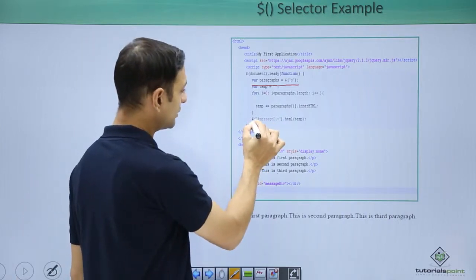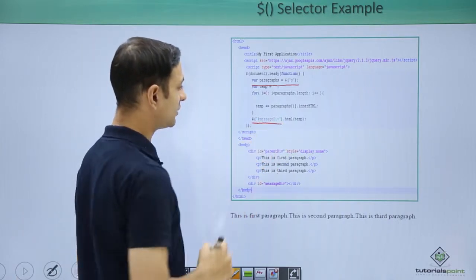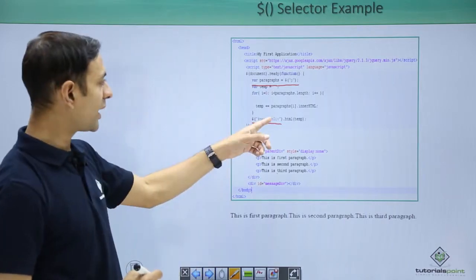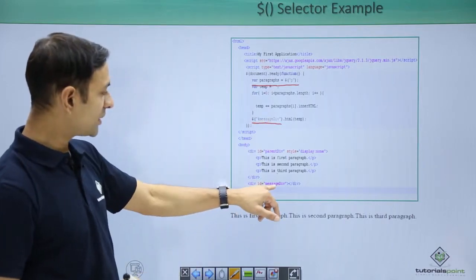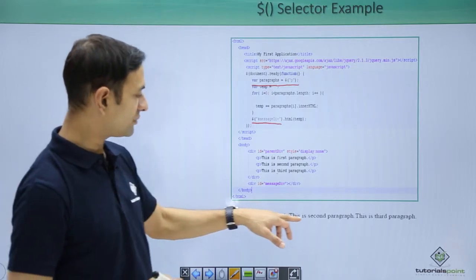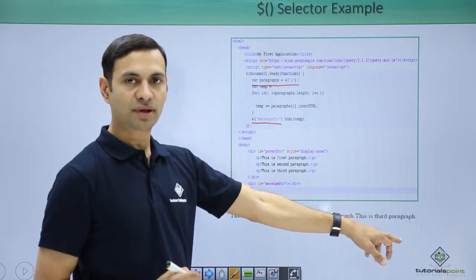Now look at this syntax: dollar hash message div. So I am getting element by ID. So my message div now has this: this is first paragraph, this is second paragraph, this is my third paragraph.